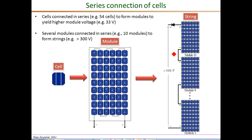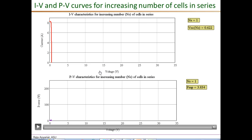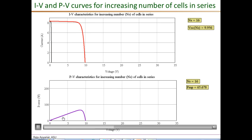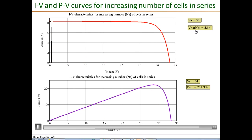Here is a small animation of the current versus voltage curves at the top and the power versus voltage curves at the bottom for various values of series-connected PV cells. For NS equals 1, we get an open circuit voltage of 0.62 volts and a peak power of 3.834 watts. Watch how the current and power change as the number of cells keeps increasing.